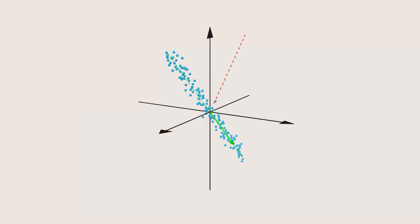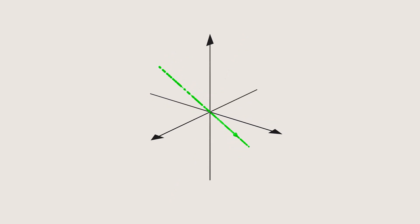For that 3D dataset, PCA will give us three principal components, red, green and blue. Here the green component represents 99.5% of the variance. So we can drop the other two, and reduce the dataset from 3D to 1D, while retaining almost all the information.